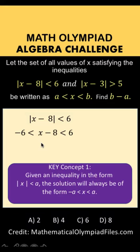To simplify, we add 8 throughout: add 8 to negative 6 to get 2, add 8 to x minus 8 to get x, and add 8 to 6 to get 14. Let's remember this solution: 2 < x < 14.